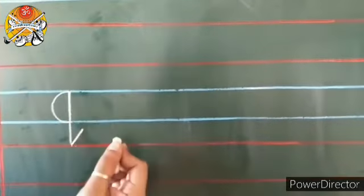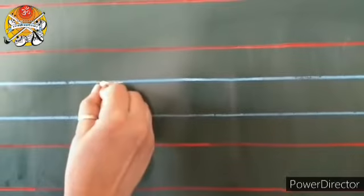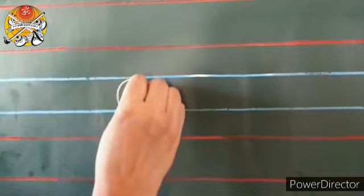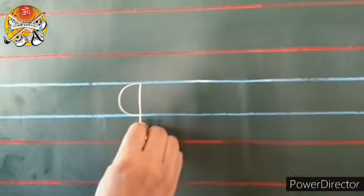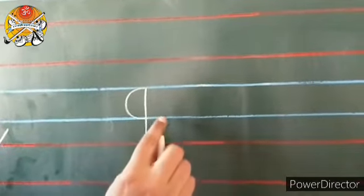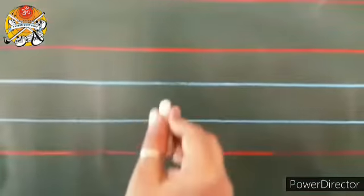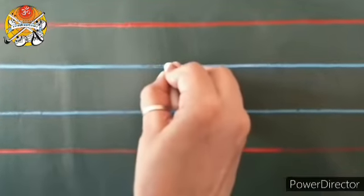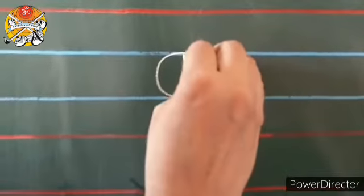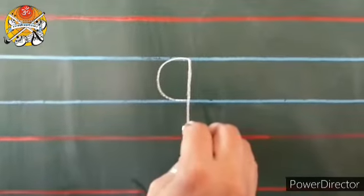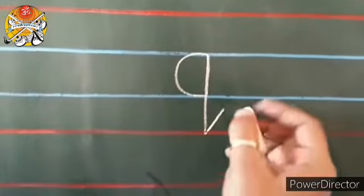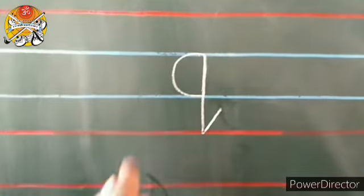Touch it and make a small slanting line. But children, do remember you should not touch this blue line. Understood? Let's write it one more time. From first blue line we will make a C curve and touch this blue line, go up and touch the first blue line, go down till the red line, touch it, and make a small slanting line. So this is script letter Q.